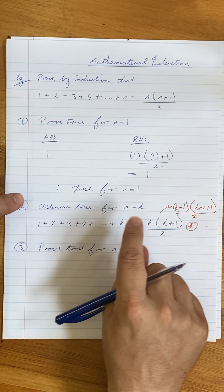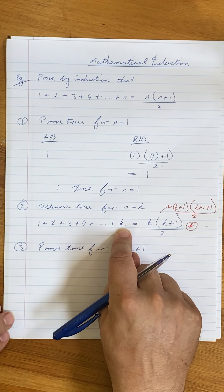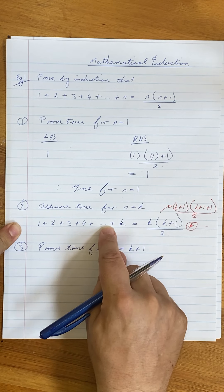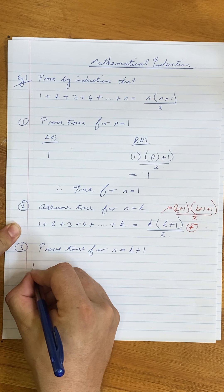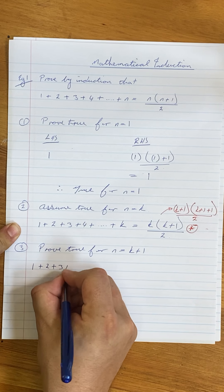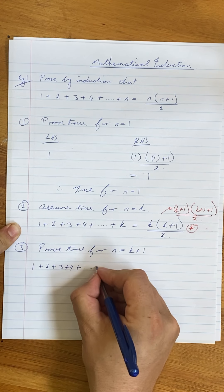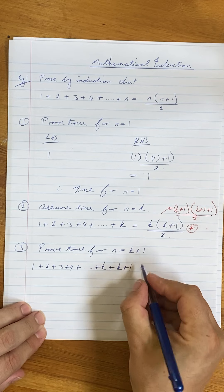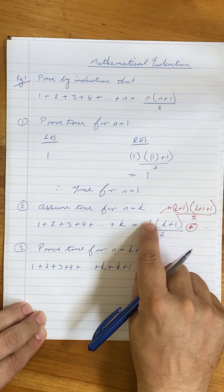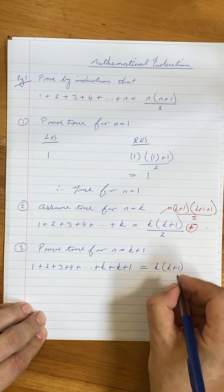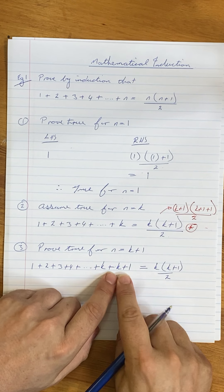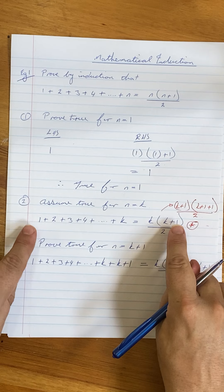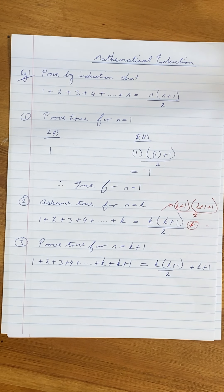What I'm doing is I'm taking this one and all I'm doing is adding a k plus 1. So we're going to have 1 plus 2 plus 3 plus 4 plus k plus k plus 1, because I'm testing for the next one. This equals k times k plus 1 over 2. And what did I do? I just added a k plus 1, so I must add a k plus 1 here as well. It's exactly the same — I'm just adding a k plus 1 on that side and on that side.